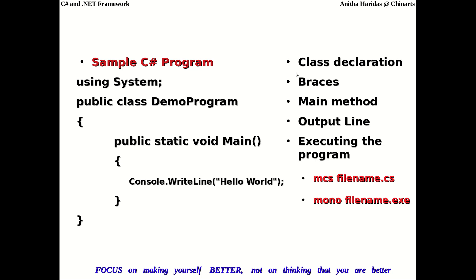Since C# is a purely object-oriented program, class declaration is very important. Anything inside a C# program must be defined inside a class — that is why we say it is a pure or fully object-oriented program. The curly braces are used to define a block in your C# program.